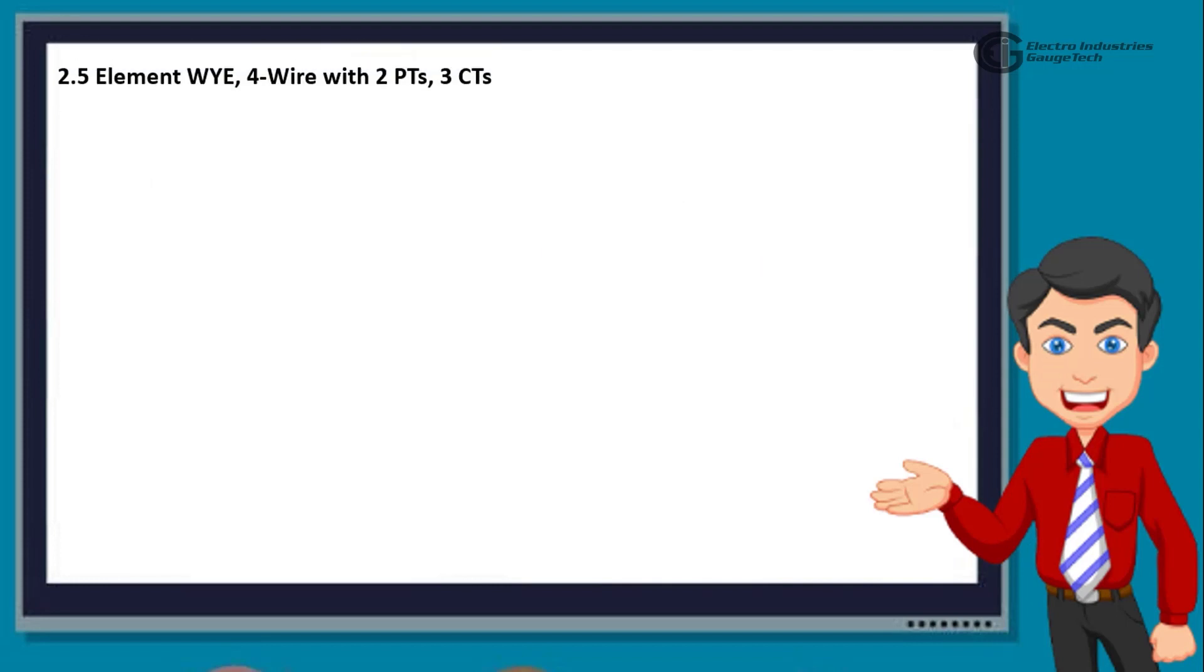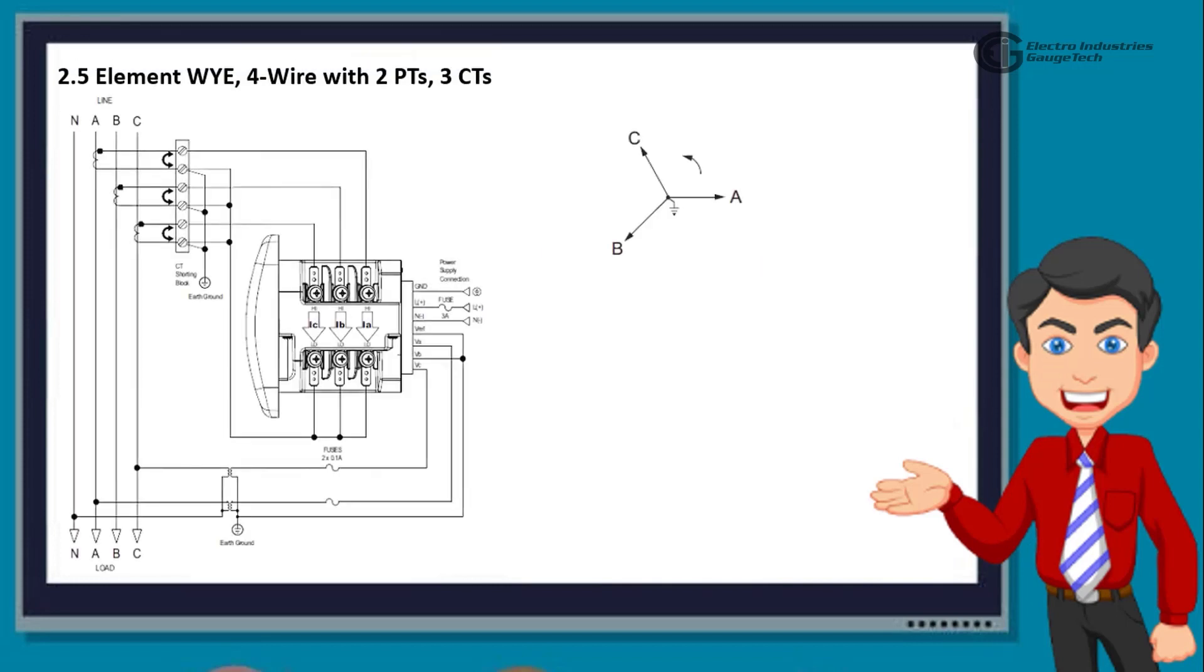Another one is 2.5 element Y, 4 wire with 2 PTs, 3 CTs. This wiring diagram shows 3 phase, 4 wire system Y with PTs, and 2.5 element. When using this wiring, select 2.5 L Y from the Shark Meter's front panel display.